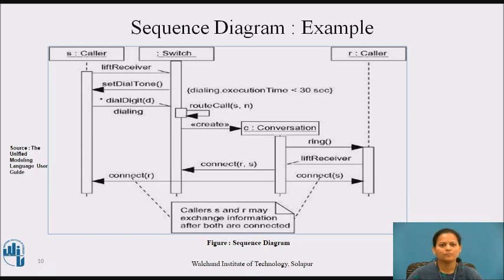An object lifeline is a vertical dashed line that represents the existence of an object over a period of time. Most objects that appear in an interaction diagram will be in existence for the duration of the interaction. So these objects are all aligned at the top of the diagram with their lifelines drawn from the top of the diagram to the bottom.